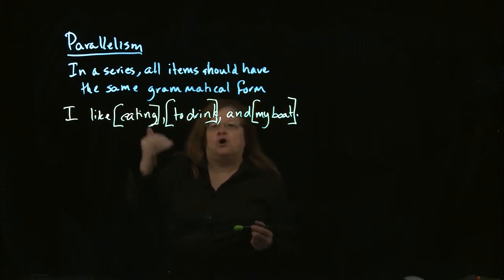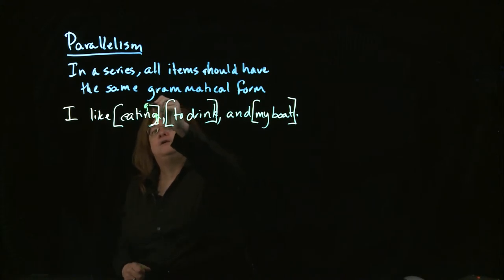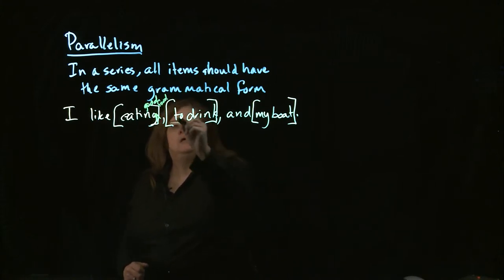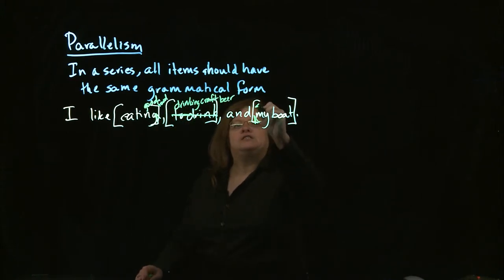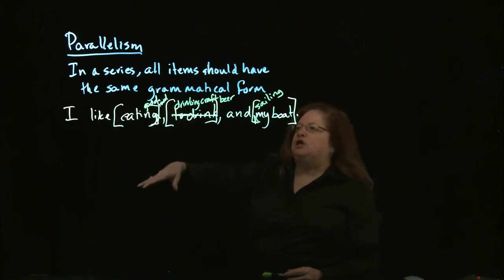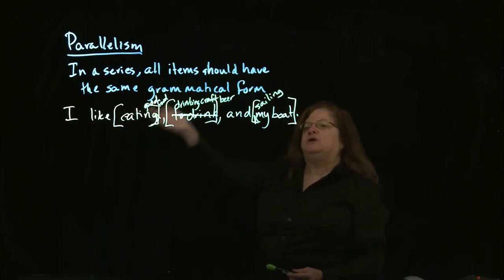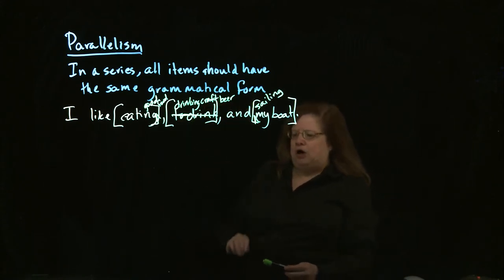So I'm going to have to work on this sentence. So I might say something like, I like eating good food, and then I might say, drinking craft beer, and I might also say, and sailing my boat. Now, we have three phrases that all match. All of them are an -ing verb followed by a noun phrase. So I have eating good food, drinking craft beer, sailing my boat. So those now are all parallel.